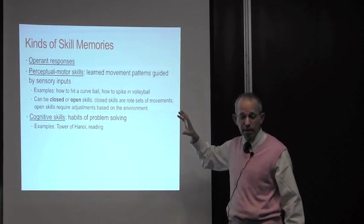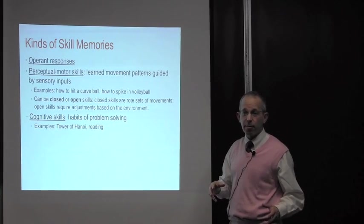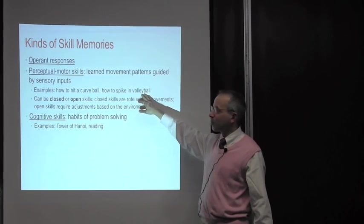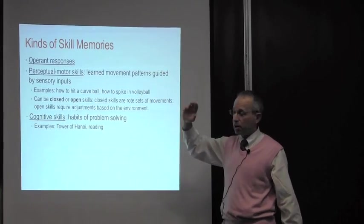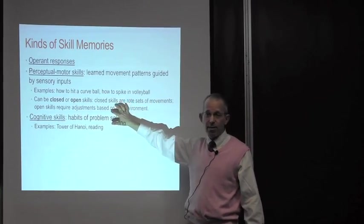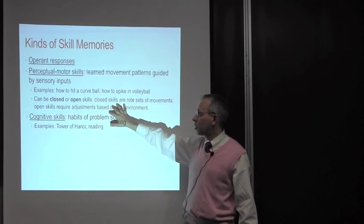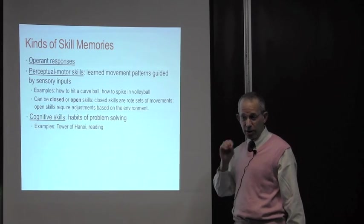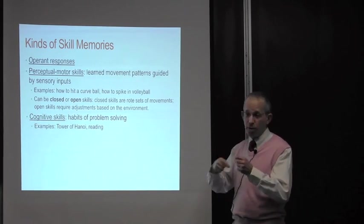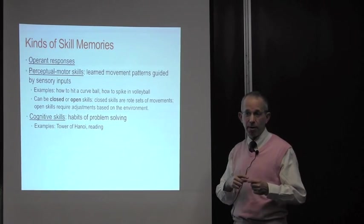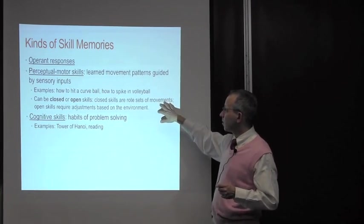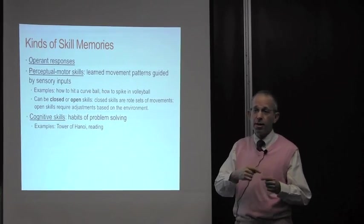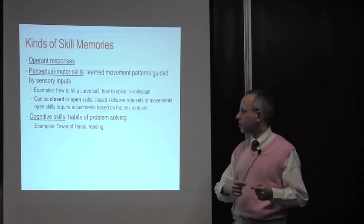We'll talk primarily about two types of skills: perceptual motor skills, which are learned movements guided by sensory inputs. Learning how to hit a curveball or spike a volleyball. There are two main classes: closed or open skills. Closed skills are rote sets of movements, which means once you start, it continues automatically. Open skills require adjustment based on the environment.